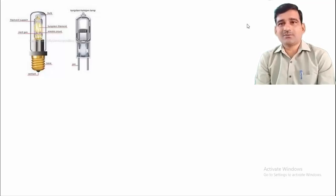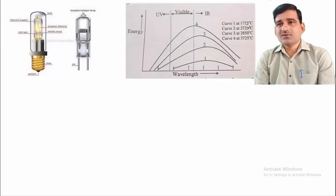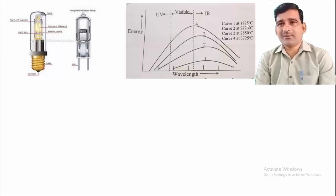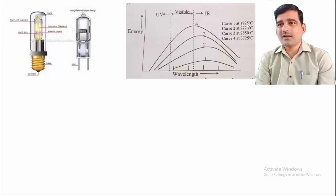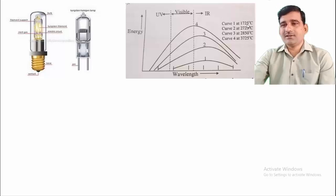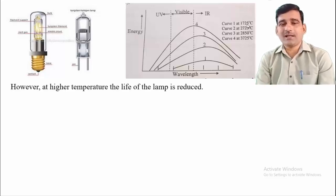A graphical representation shows the operating temperature versus emitted light in the UV, visible, and IR regions. At 1725°C (curve 1), more radiation is in the IR region. As temperature increases to 2725°C (curve 2), more radiation appears in the visible region. At 3725°C, the lamp gives more intense light in both UV and visible regions — but at higher temperatures, the life of the lamp is reduced. Therefore, it is desirable to use a moderate operating temperature that balances visible-region output with lamp life.